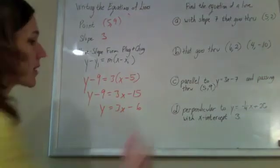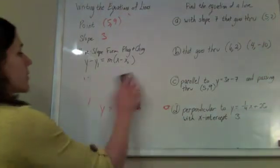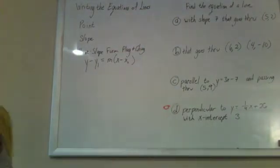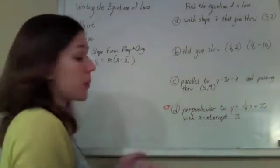Alright, last guy, perpendicular. This one's the meanest of them all. They didn't give us anything, but we can figure stuff out. We're good. We know that if our line is perpendicular to this line, it should have the opposite reciprocal slope.